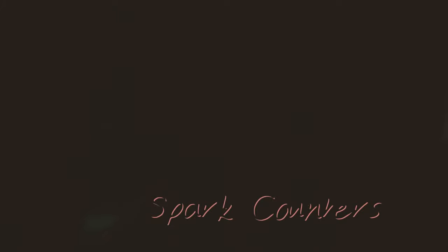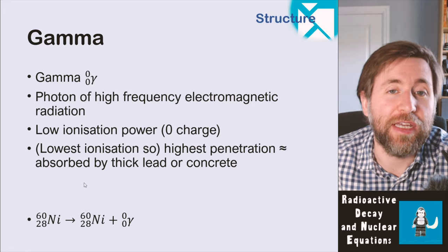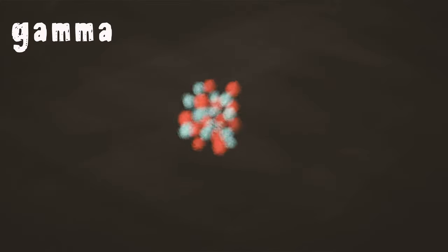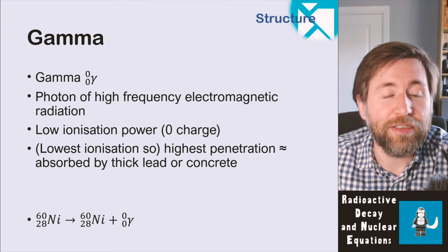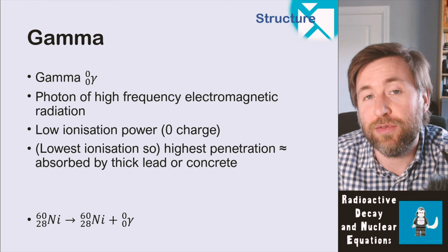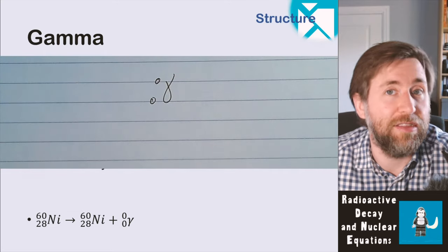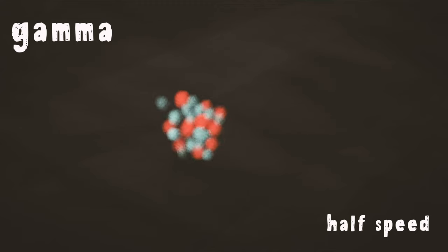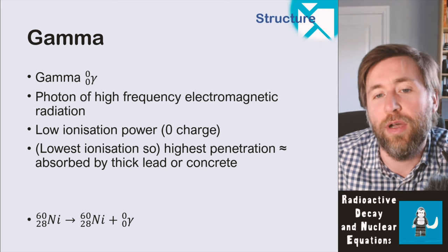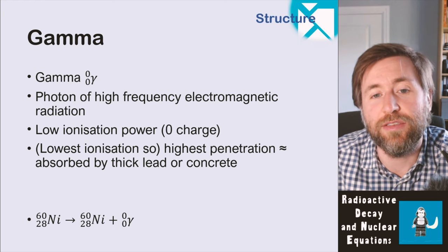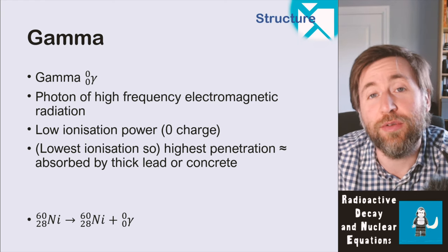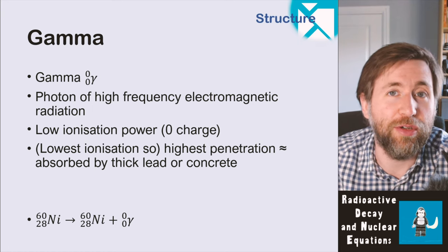The sparks you're seeing are caused by cosmic showers — radiation from gamma rays from space. No alpha or beta particles can reach us from space, so all of this radiation is caused by gamma radiation emitted from the sun. Gamma radiation is high-energy electromagnetic radiation emitted from the nucleus. To become more stable, an isotope can give out high-frequency electromagnetic radiation. The notation is zero and zero — zero mass and zero proton number. It's a photon of high-frequency electromagnetic radiation. Because it has no charge, it has low ionization power and is the highest-penetrating type.